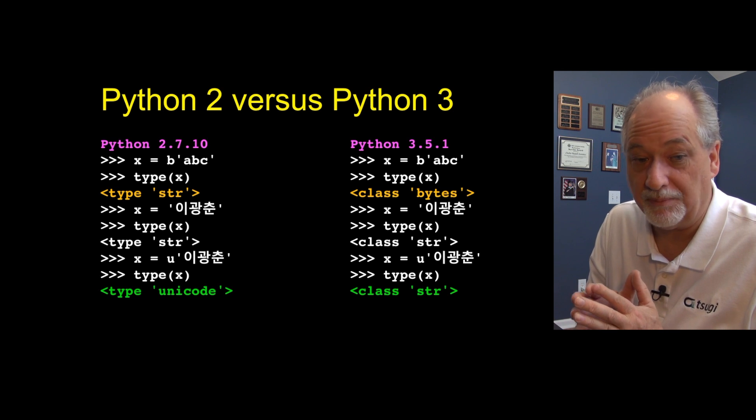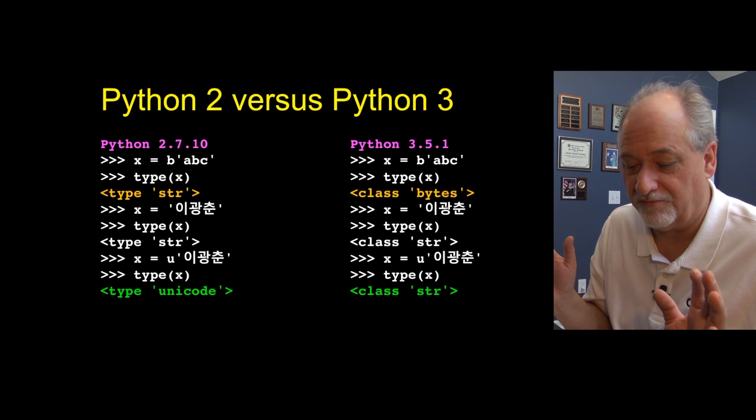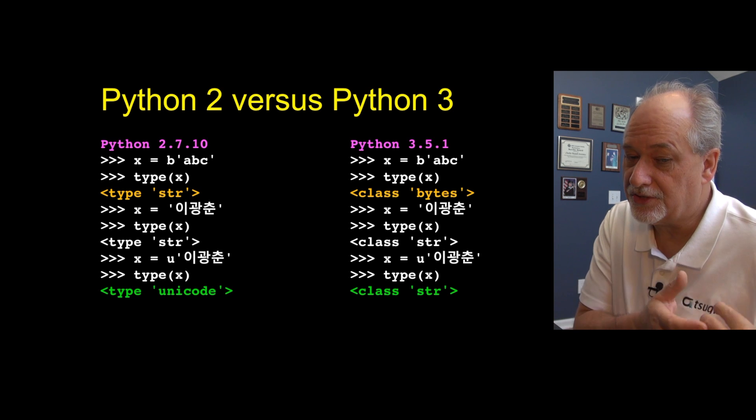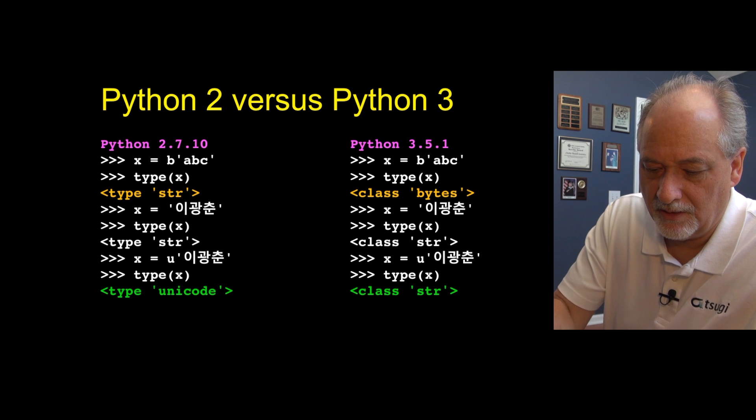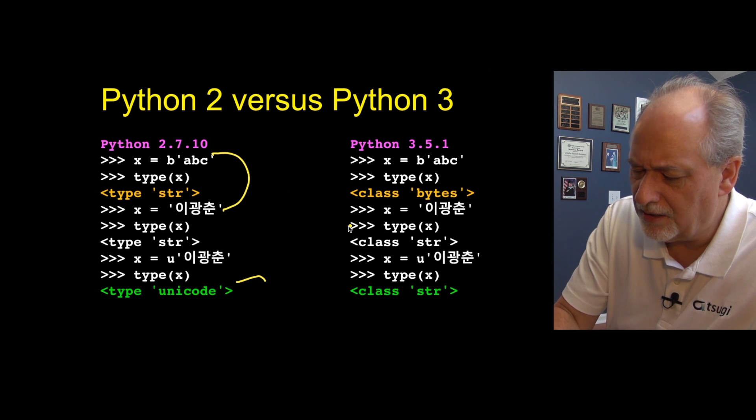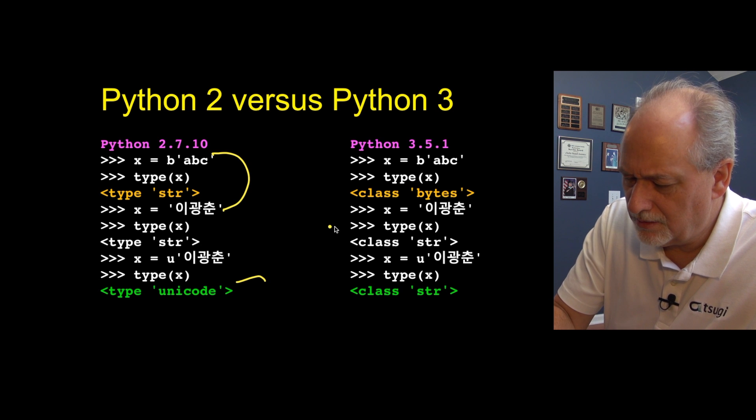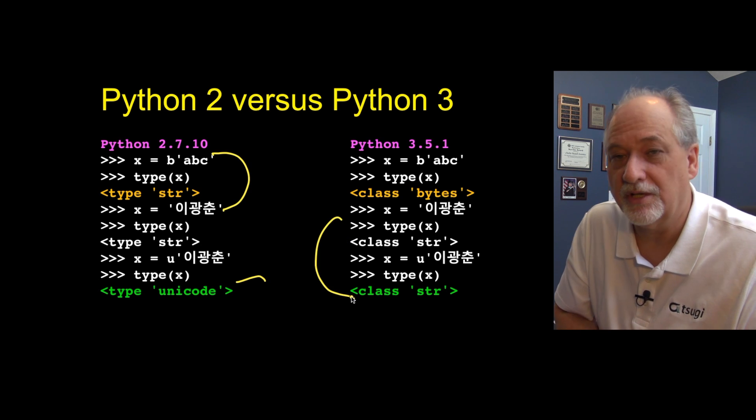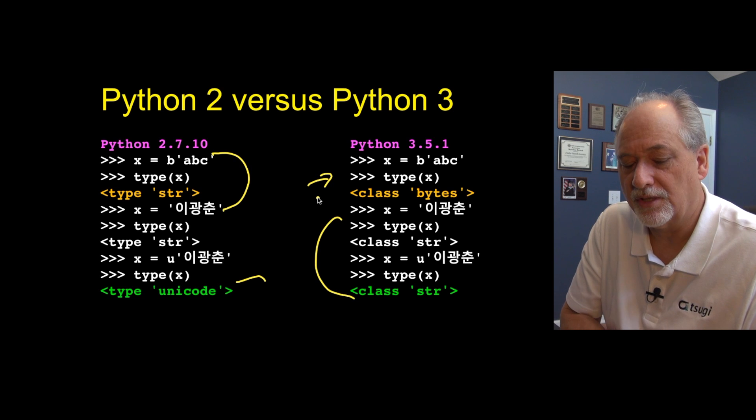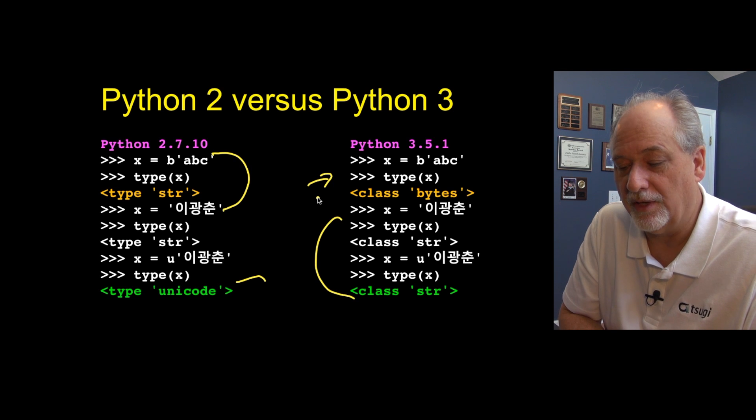Whereas a string might be three, a three character string might be anywhere from three to 12 bytes long. So Python 2 had bytes and strings that were the same. Bytes and strings are the same. And Unicode is weird. And in Python 3, strings and Unicode are the same. And bytes are weird.